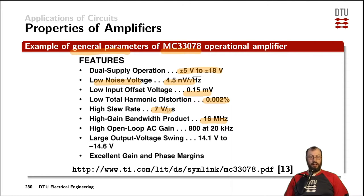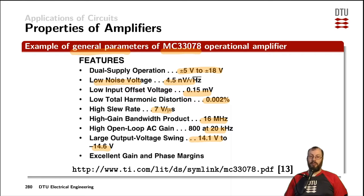The open-loop gain — that is where we have the maximum DC gain, or in other words, where the corner frequency of the amplifier is — is specified up to 20 kilohertz. From the output specification, we can see that it cannot swing all the way to the supply voltage, but only from 14.1 to minus 14.6 volts. There are also some operational amplifiers that go rail-to-rail, meaning they can go all the way to the maximum supply voltage supplied to the amplifier.